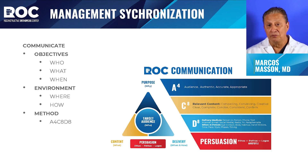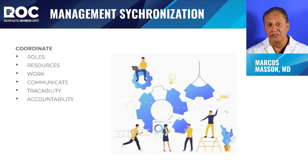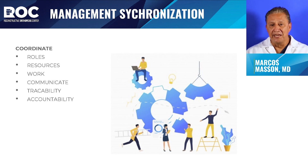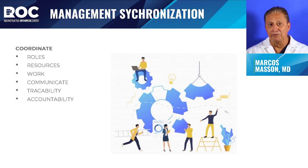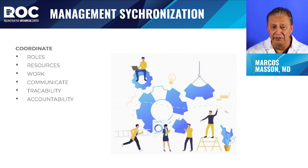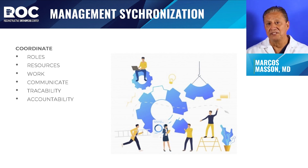The final role in management synchronization is coordination — a dynamic execution of environmental findings that allows you to execute and get results. It requires selecting the right roles, the right resources, the type of work to be done, the correct communication, and traceability in order to determine accountability for what is done and by when.